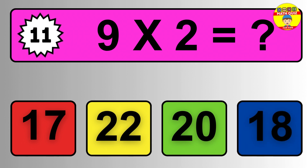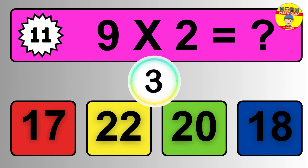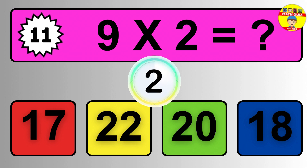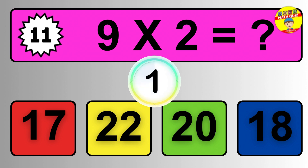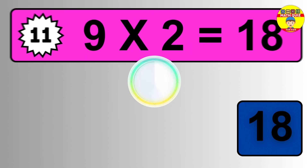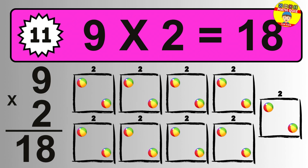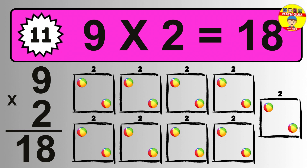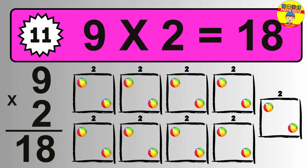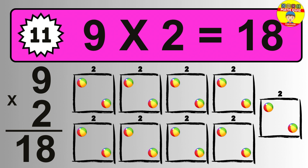Question eleven: nine times two equals what? The answer is nine times two is eighteen. To calculate, we have nine groups with two balls each. So how many balls do we have? Eighteen balls.